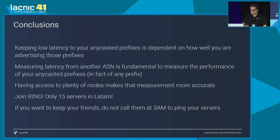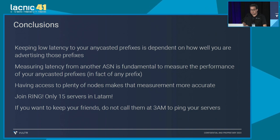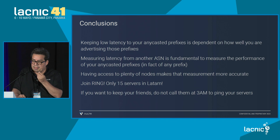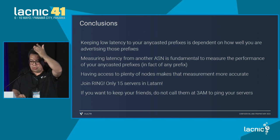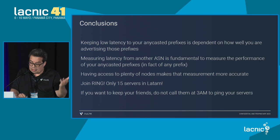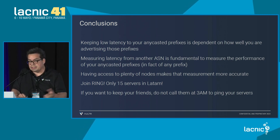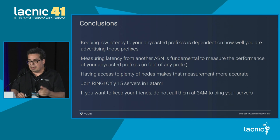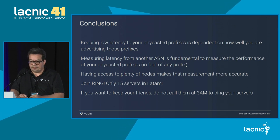Conclusions: we need to keep anycast prefix latency low. It depends on how you advertise those prefixes. We need to work with different ASNs. We need to measure from different remote sites how to reach our anycast prefixes. Join Ring — there are only 15 servers in LATAM and there could be more. And my last conclusion: please do not call your friends at 3am to ping your servers.